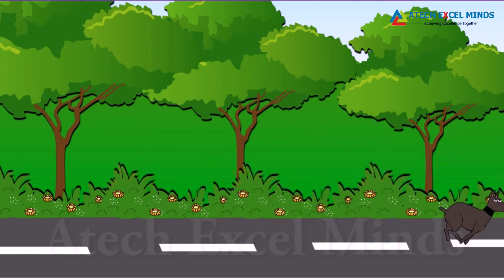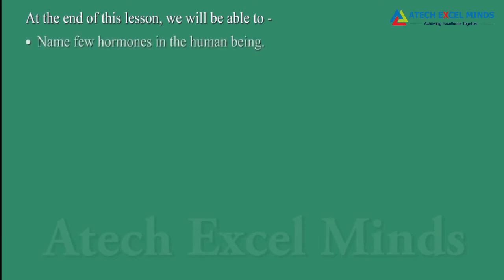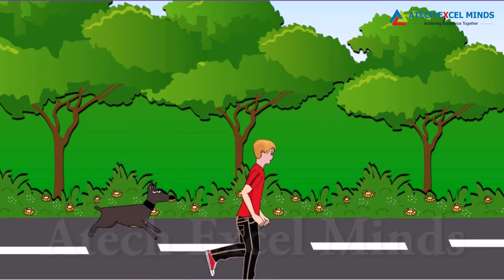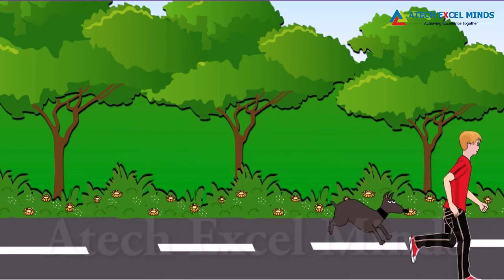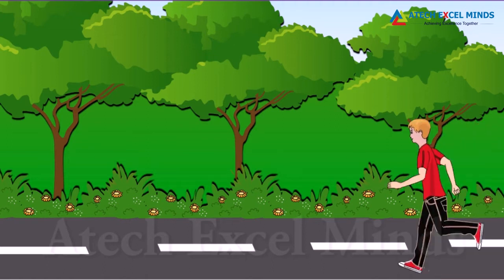Welcome to the lesson on coordination in animals. At the end of this lesson, we will be able to name a few hormones in the human body and explain the role of each hormone. In situations where we have to be prepared for fighting or running away, such incidents cause the release of hormones in human beings — adrenaline hormones.